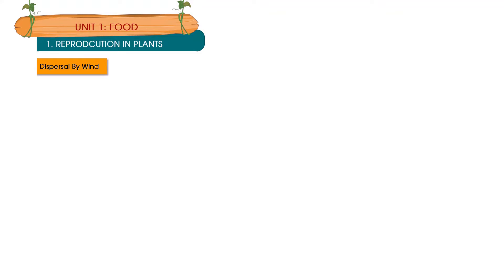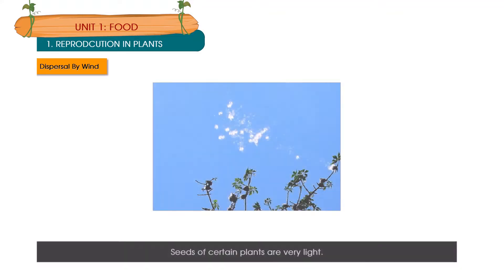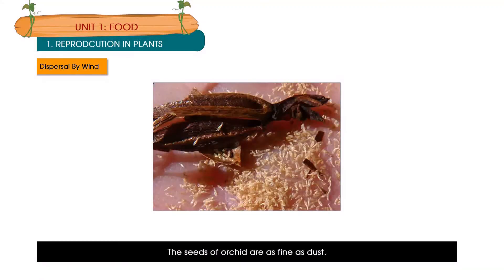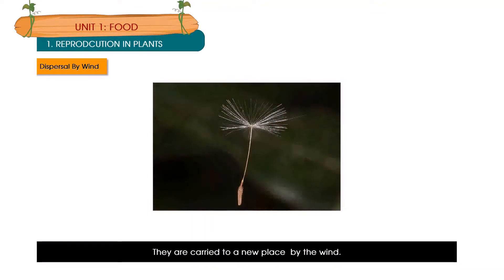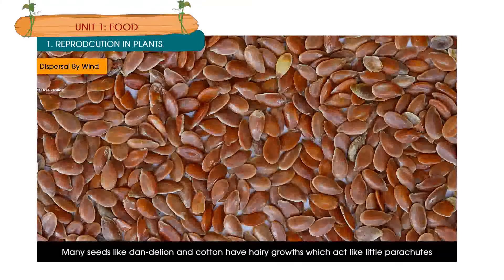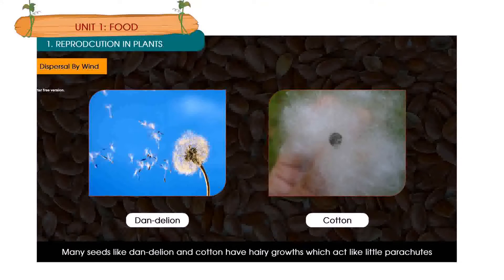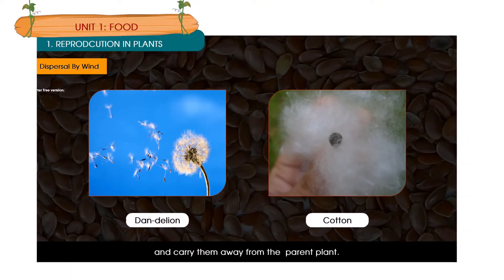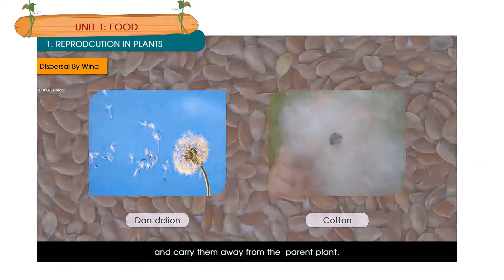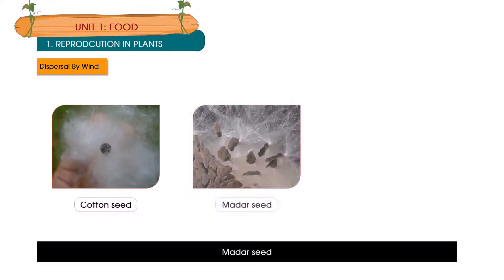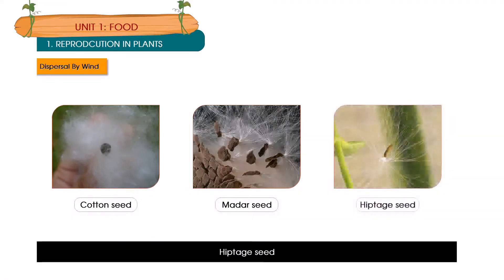Dispersal by wind: Seeds of certain plants are very light. The seeds of orchids are as fine as dust and are carried to a new place by the wind. Many seeds like dandelion and cotton have hairy growths which act like little parachutes and carry them away from the parent plant. Examples include cotton seed, madder seed, and hiptage seed.